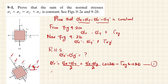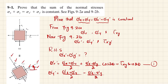We also derive that σy' is equal to (σx + σy)/2 minus (σx − σy)/2 times cos(2θ) minus τxy times sin(2θ). This is equation 2.